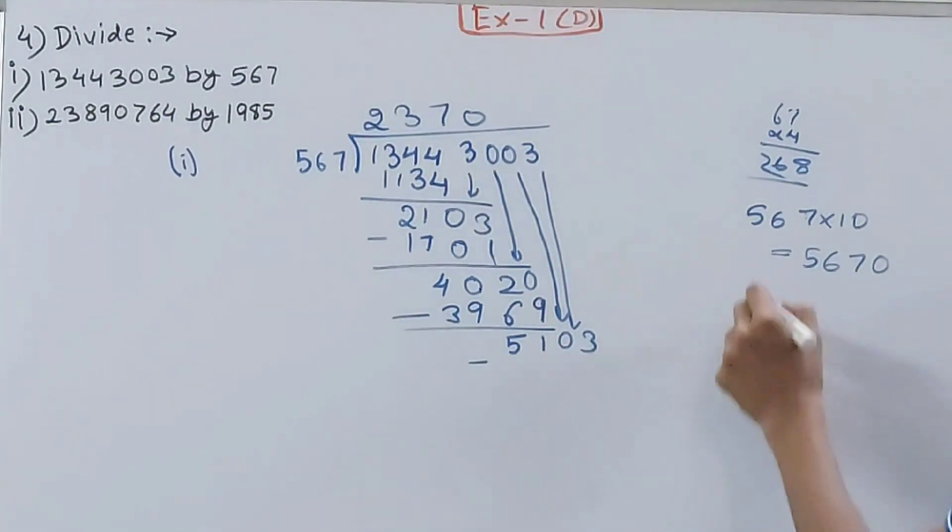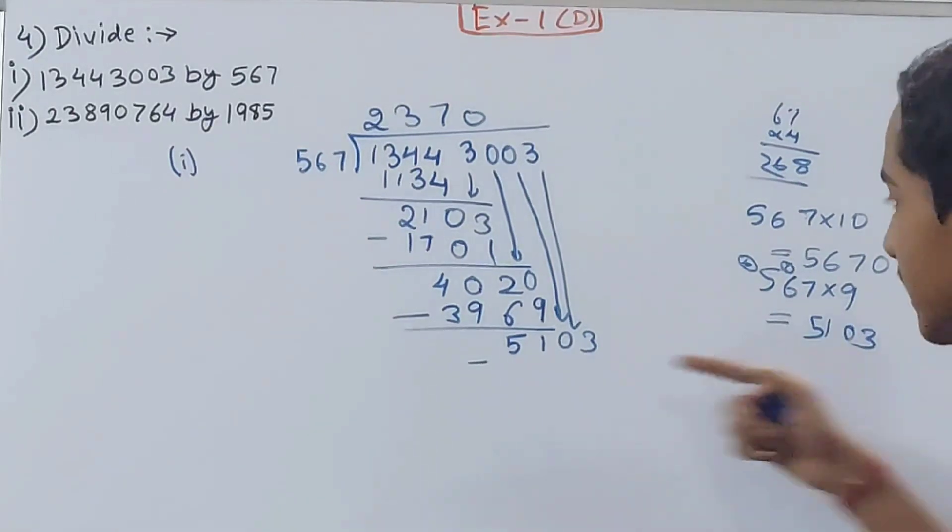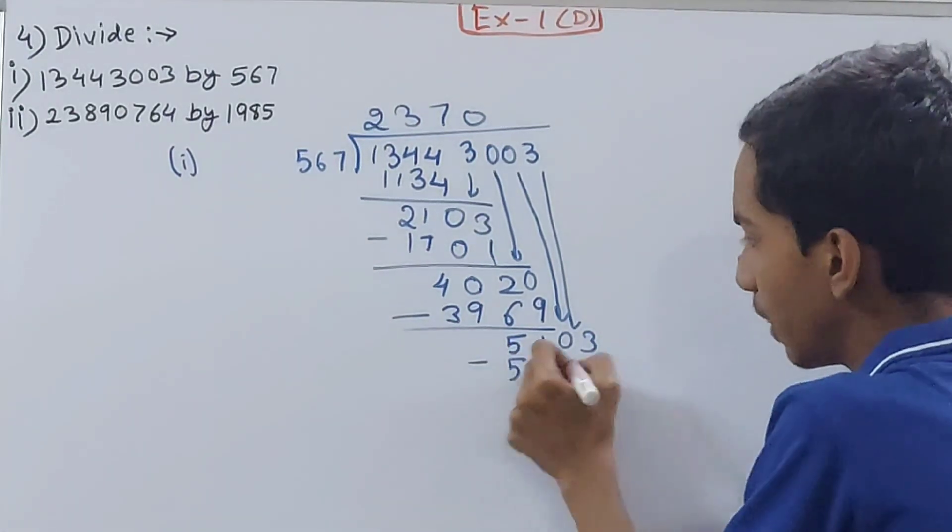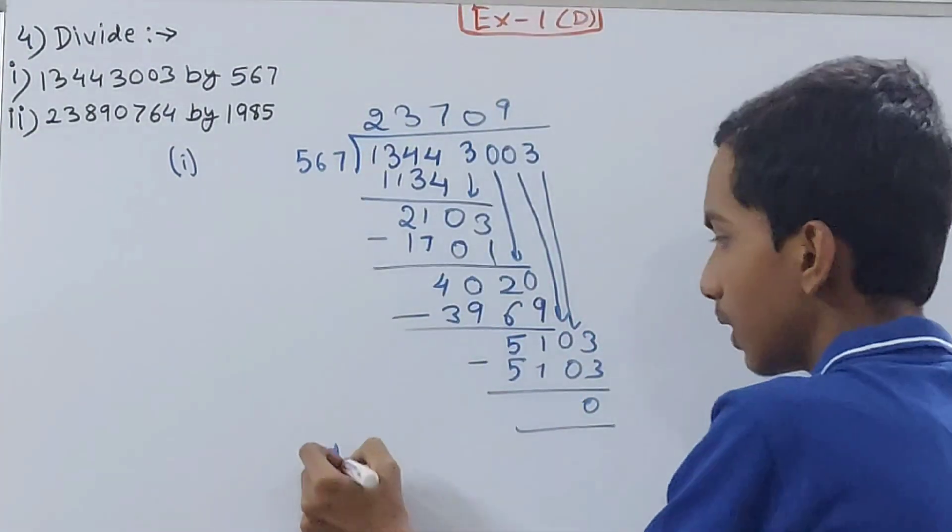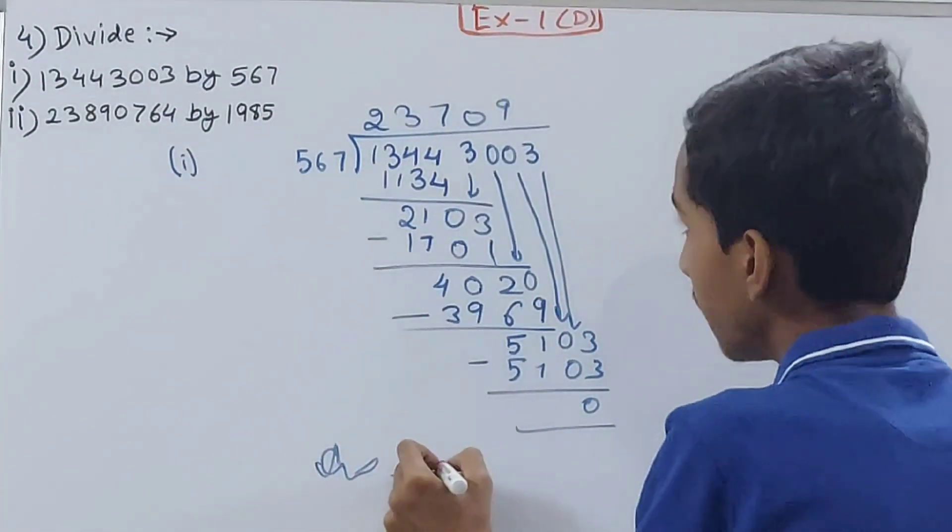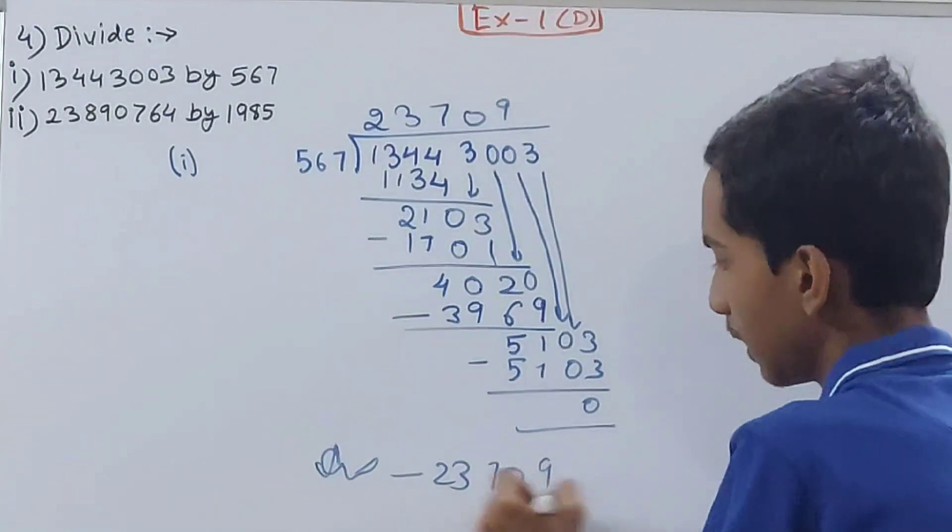Now 5103. 567 into 10 is 5670, but I want 5103. So can I do 567 into 9? This will be 9 times 7 is 63 and 6 carried over, 9 times 6 is 54 and 6 is 60, and 45 and something is 5103 exactly. So I'll subtract this and put here 9. Your answer becomes 23,709.